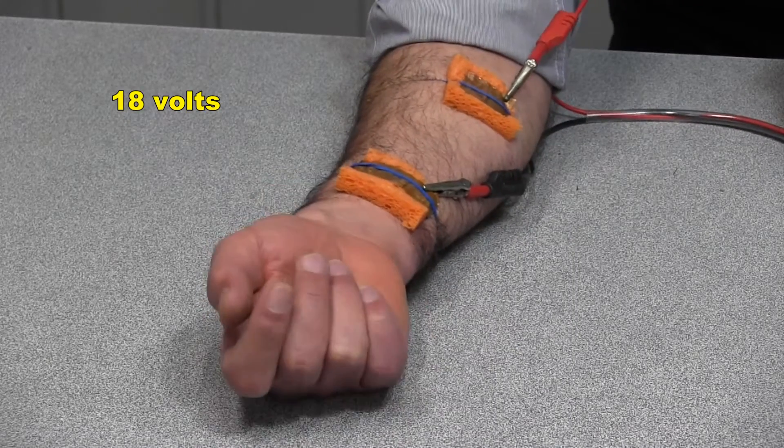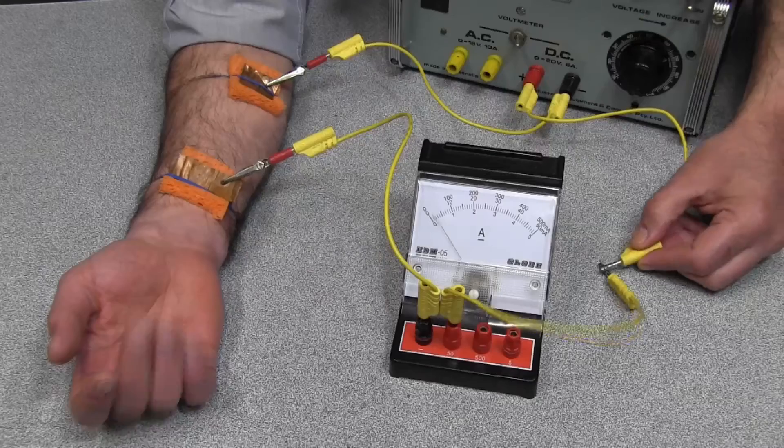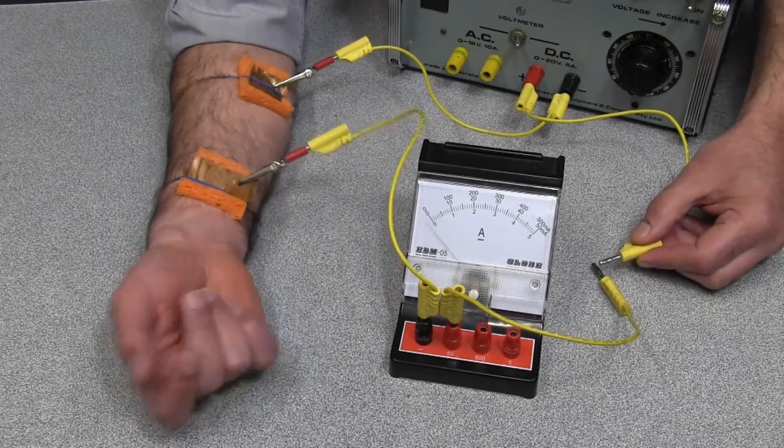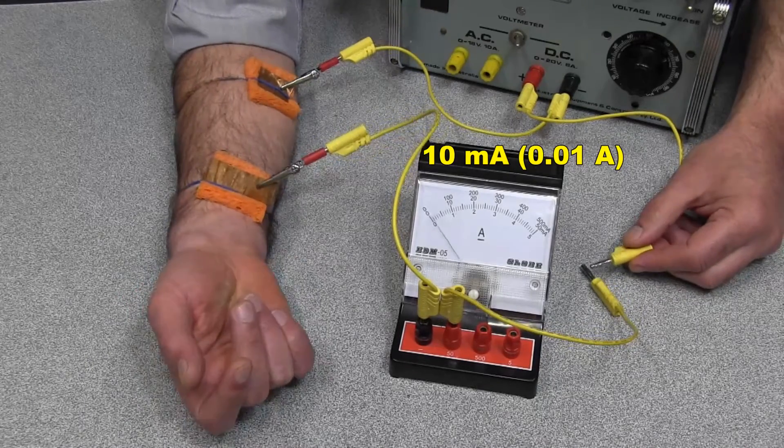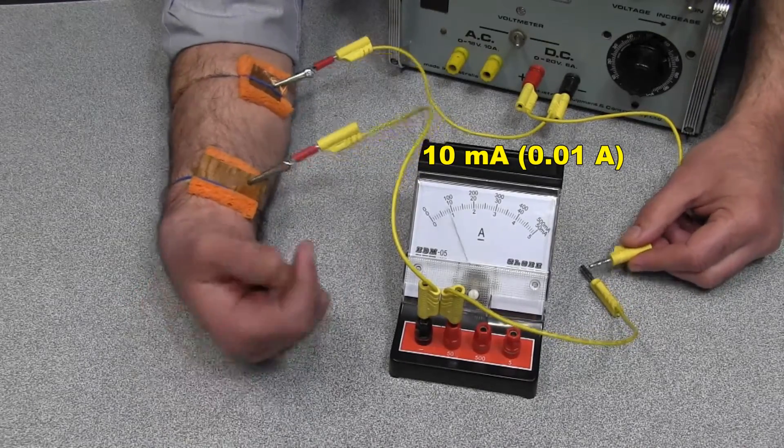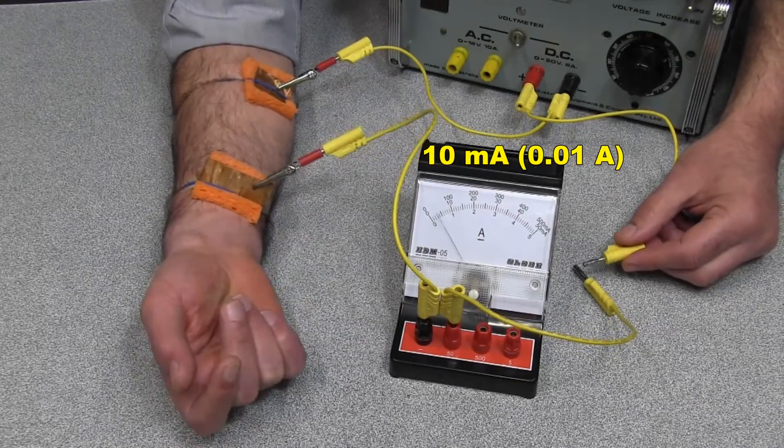Electricity is not something we should mess with. Some of the spasms were quite painful. I then connected an ammeter to the circuit and the peak current was only about 10 milliamps, 0.01 of an amp. So if 18 volts has this effect, imagine the effect of accidentally connecting to a mains 240 volt supply.